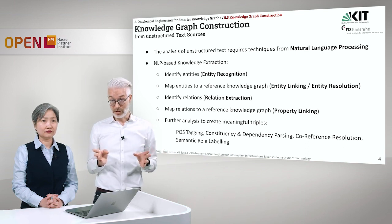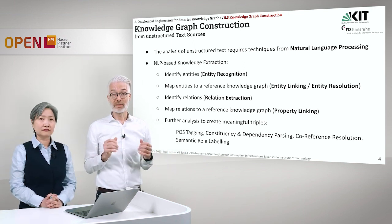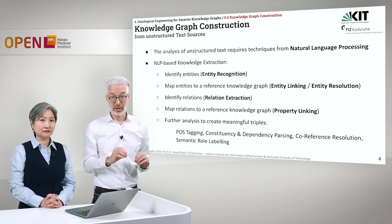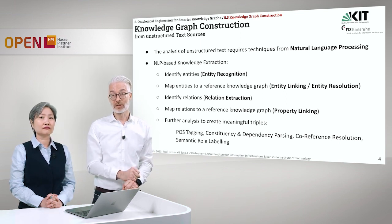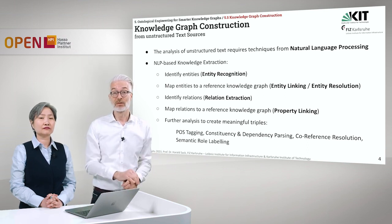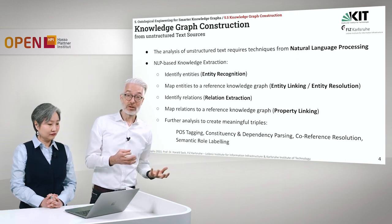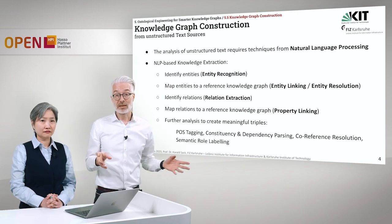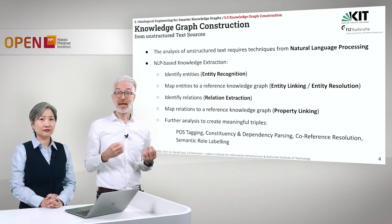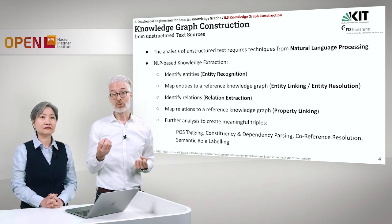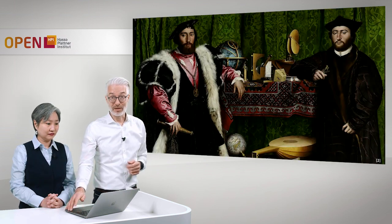But this is not the whole story. If you have the entities, you need to know how they are related with each other from the text. You have to identify the relations — you do this usually with techniques from relation extraction. Then you also map your relations to a reference knowledge graph, because you might use a property that has already been defined somewhere — this is property linking. Further analysis is needed to create meaningful triples, which means you have to do part-of-speech tagging, constituency and dependency parsing, coreference resolution, and semantic role labeling.